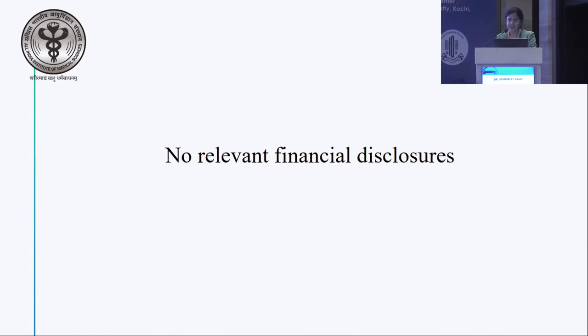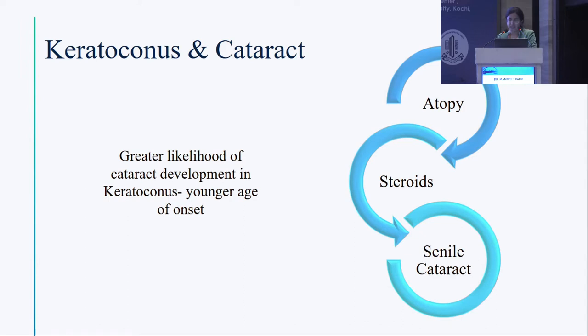We may choose not to do a surface ablation in a patient with keratoconus, or not go ahead with a phakic implantation, but cataract we cannot escape. We will all face cases that have keratoconus and cataract. They have a greater likelihood of developing cataract at a younger age because of associated atopy, steroid use, associated vernal keratoconjunctivitis, and senile cataract per se.